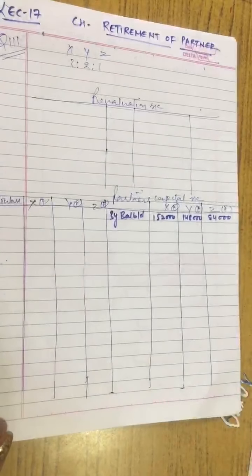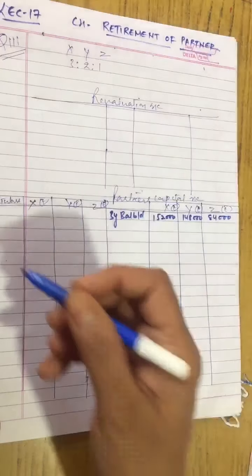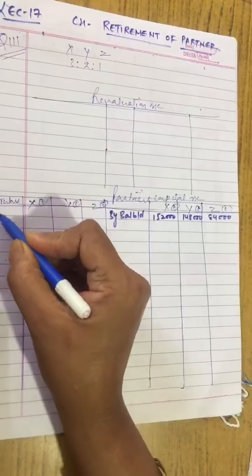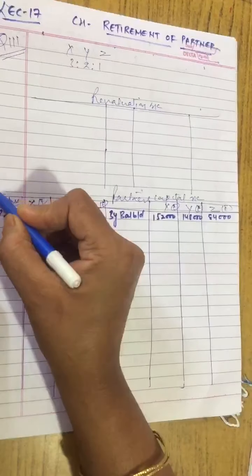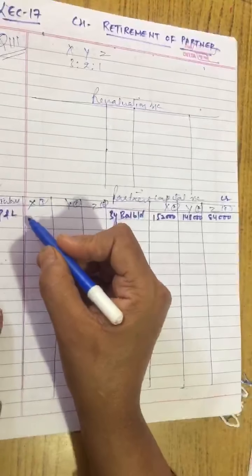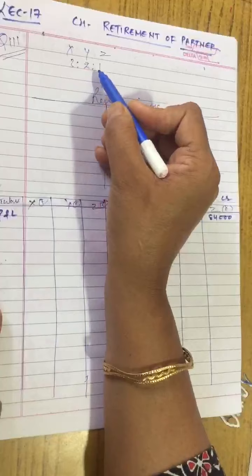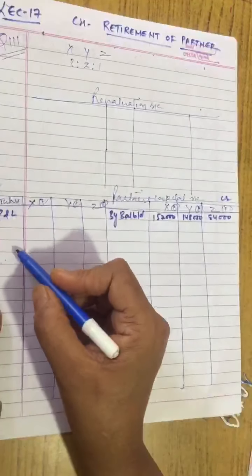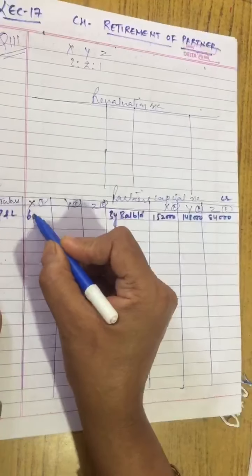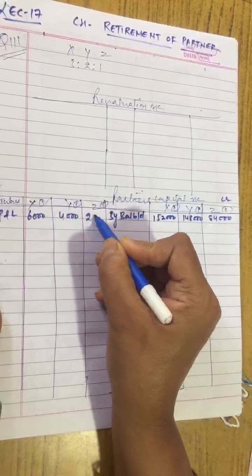On the asset side there is building, machinery, debtors with a provision of 10,000, store, cash at bank, and a loss of 12,000. Since there is a loss, we will bring it down to the debit side of partners. The loss of 12,000 is to be distributed in 3:2:1 ratio, so it becomes 6,000, 4,000, and 2,000.